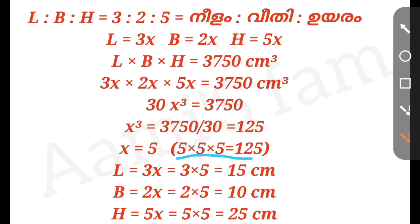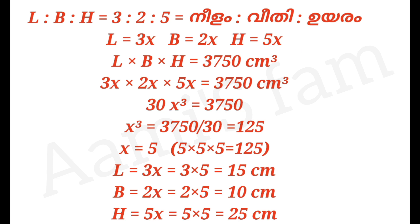If x equals 5, then length equals 3 times 5 equals 15 cm, breadth equals 2 times 5 equals 10 cm, and height equals 5 times 5 equals 25 cm. This is a simple question. Thank you.